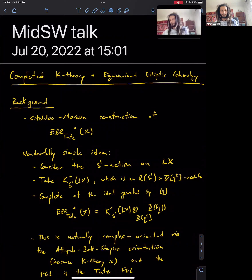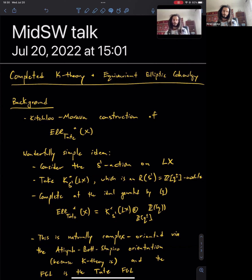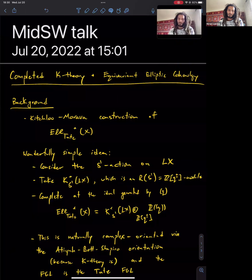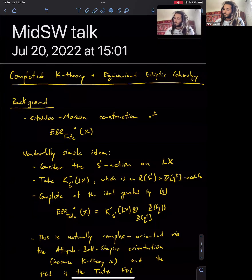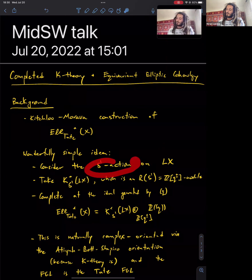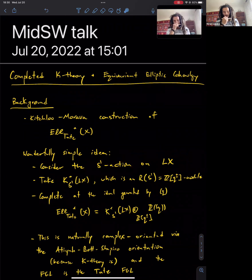Let me back up a little bit. The motivation comes from a paper of Kischlu and Morava, where they give a construction of non-equivariant elliptic cohomology at the Tate curve. It's a wonderfully simple idea. To construct elliptic cohomology at the Tate curve for some space X, you take the free loop space of X, which has an action by S1 rotating the loops, and then you look at the equivariant K-theory of the loop space.